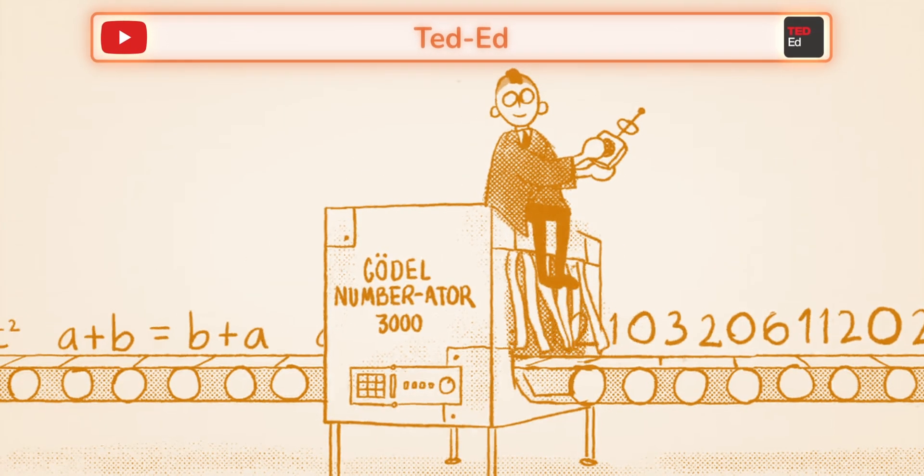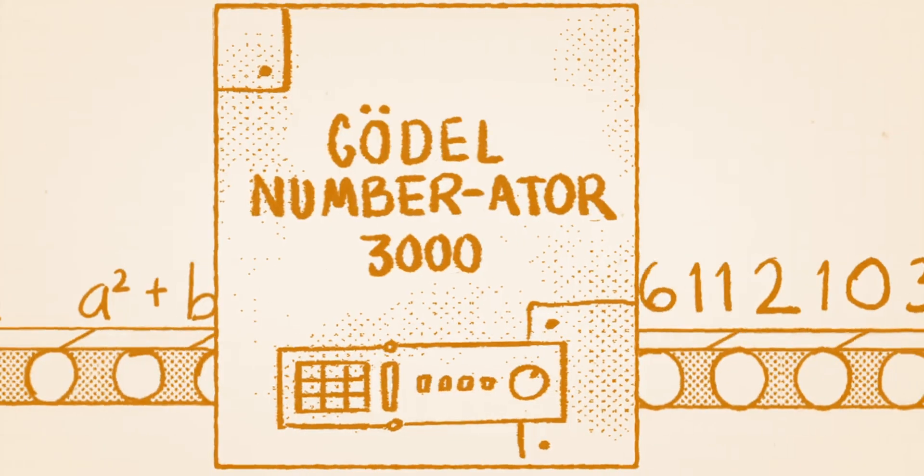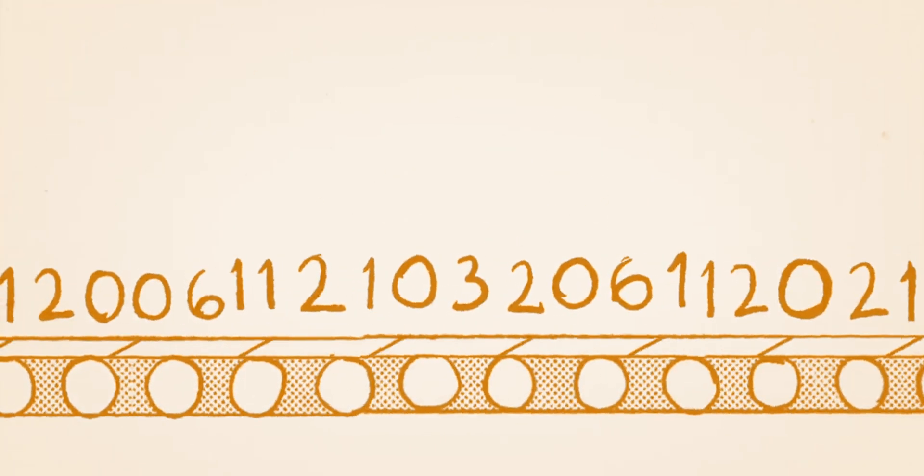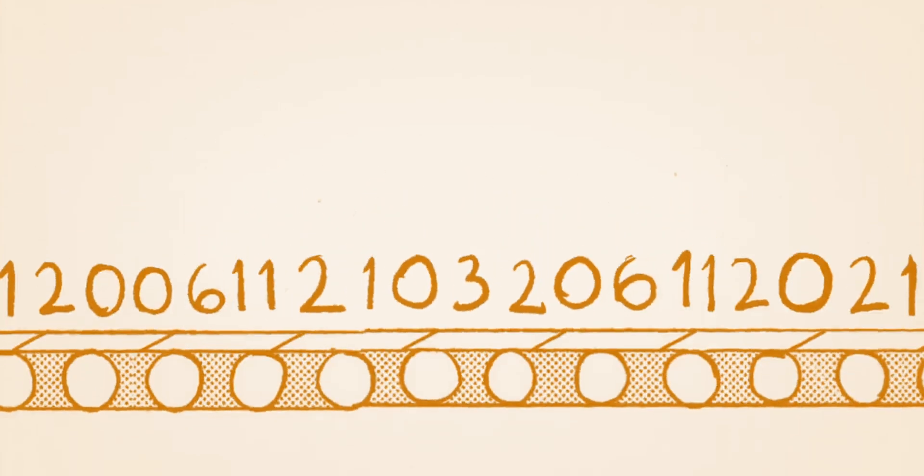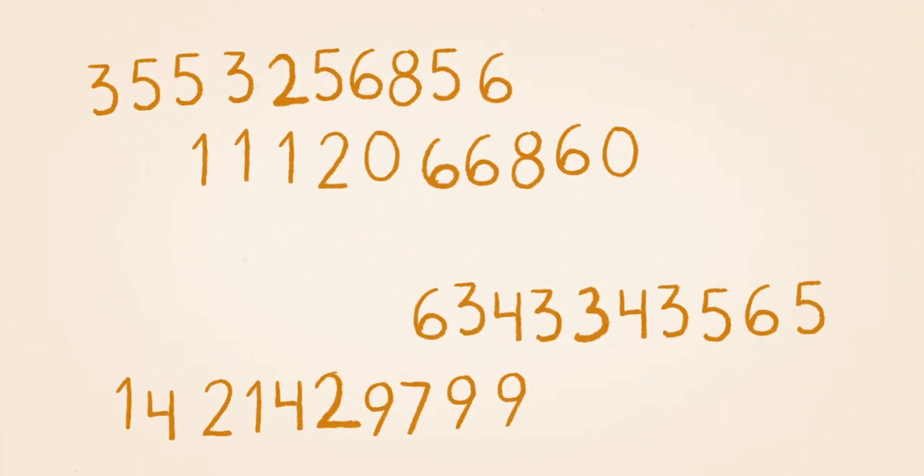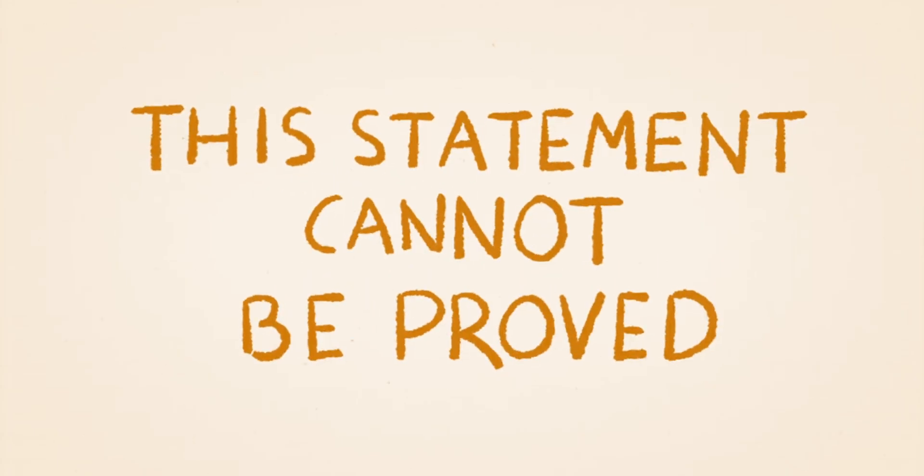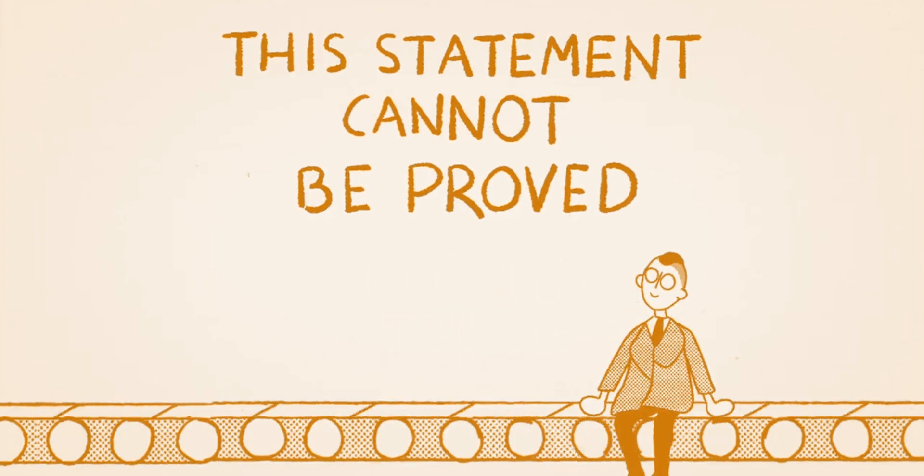First, he translated mathematical statements and equations into code numbers so that a complex mathematical idea could be expressed in a single number. This meant that mathematical statements written with those numbers were also expressing something about the encoded statements of mathematics. In this way, the coding allowed mathematics to talk about itself. Through this method, he was able to write 'this statement cannot be proved' as an equation, creating the first self-referential mathematical statement.